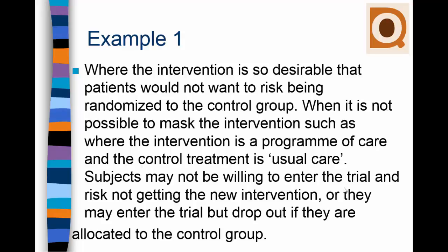One solution in such situations is for the researcher to decide in advance to offer the intervention to all control group subjects after the trial has finished — assuming the intervention proves to be effective. For example, in exercise therapy trials, control group subjects may be offered the exercise regime at the end of the trial if it has been shown to work.